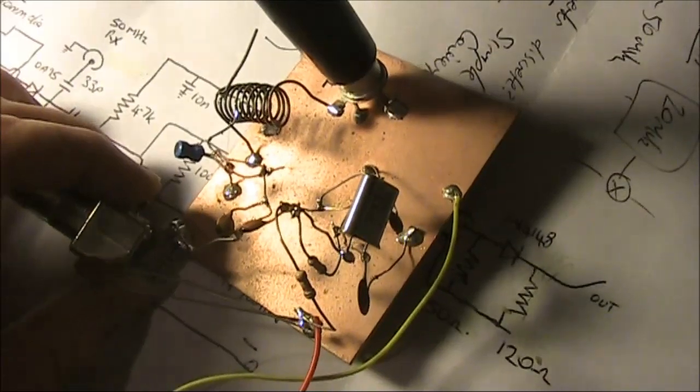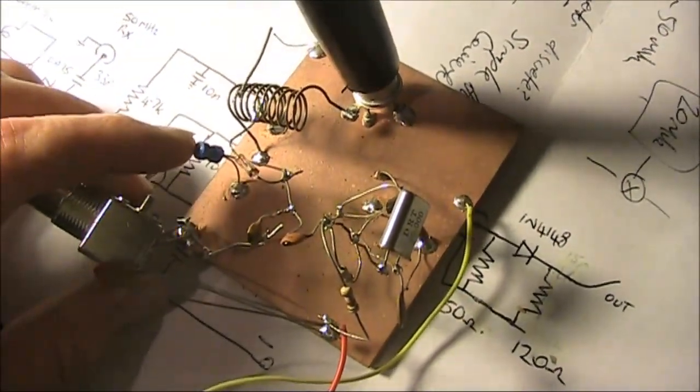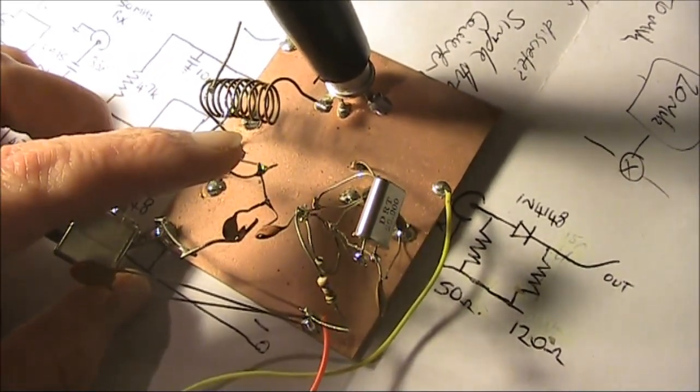The converter is about the simplest you can get. The idea is that it steps incoming signals on 70MHz down to 50MHz.